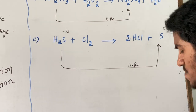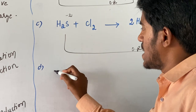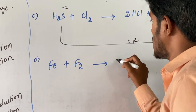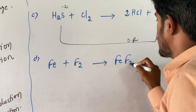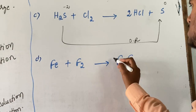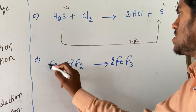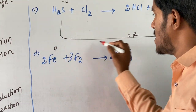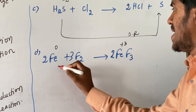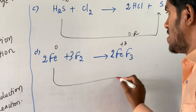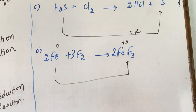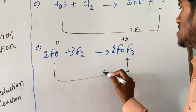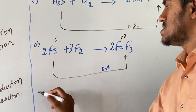Another example: 2Fe + 3F₂ → 2FeF₃. The balanced reaction: iron charge on the left is 0, and here the iron charge is +3. Increase in positive charge — hence the reaction is an example of oxidation reaction.